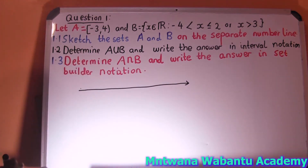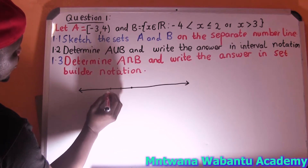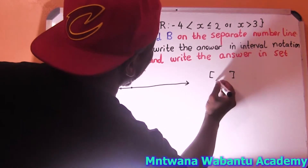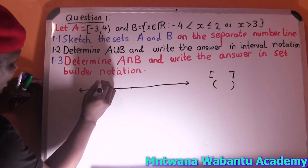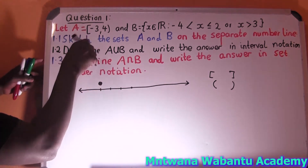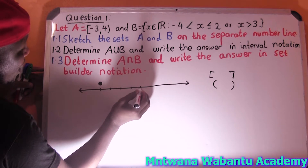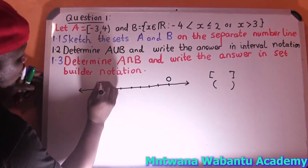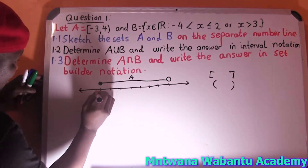Let me show you how I do this. We draw a number line. Let's assume this is 0. So negative 3 — when you see this bracket sign here it means including. But the other end is excluding. Since negative 3 is including, you put a solid dot. Then it goes all the way to positive 4 — positive 4 is excluding, so you use an open dot. This is Set A: from negative 3 to positive 4.